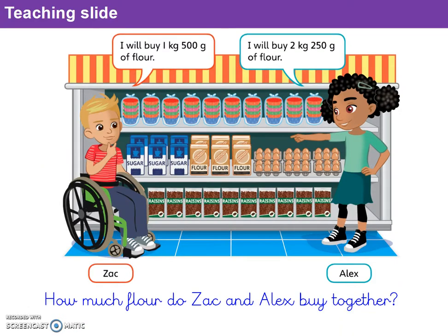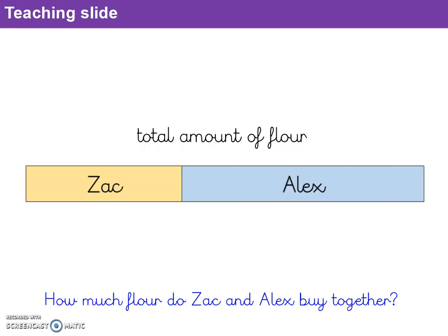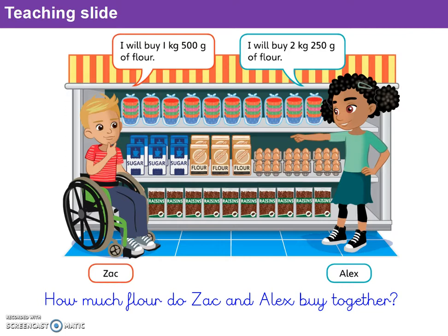Let's begin with question 1a: how much flour do Zach and Alex buy together? With this question, the word 'together' means we're looking at both amounts at once. I've represented this as a bar model, so we can see Zach and we can see Alex. Their amounts are both put together and that gives us the total amount of flour — that tells us how much flour Zach and Alex will buy together. Now we've worked out the operation, let's look at the strategy we can use to solve it.